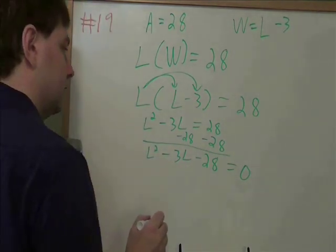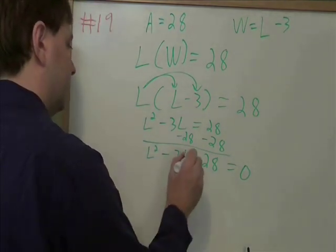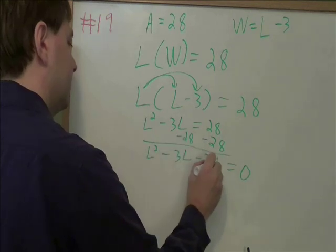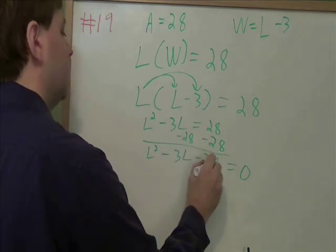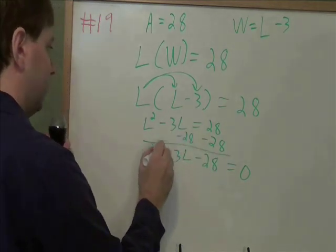And to solve a quadratic, the easiest thing to do is to factor it. So to factor, that means you need two numbers that multiply to be the last piece, that negative 28, and add up to be that middle piece, that negative 3.